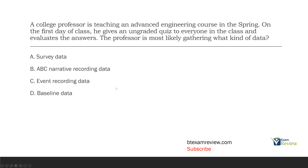What he's looking at is Option D: baseline data. Baseline data is the data that we take before intervention starts — it's where the learner begins. In this case, the college professor is figuring out where his students are starting before he even teaches them anything. By giving this ungraded quiz on the first day and evaluating the answers, he's not assessing for a grade, he's just getting a baseline. So when he does start teaching, he can see what kind of change is being made. The answer is D, baseline data.